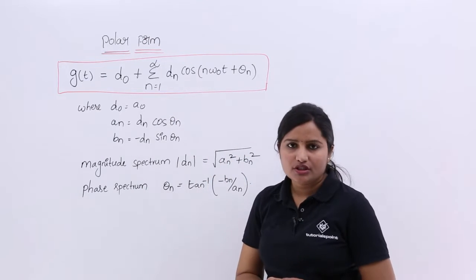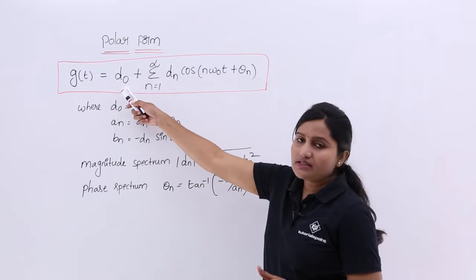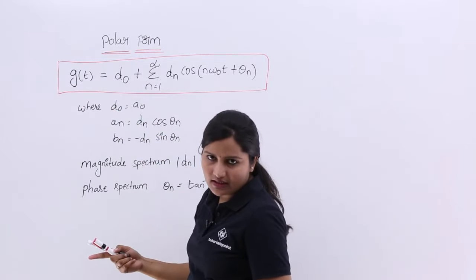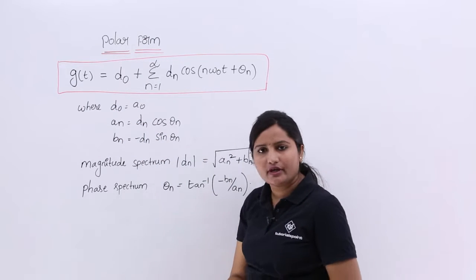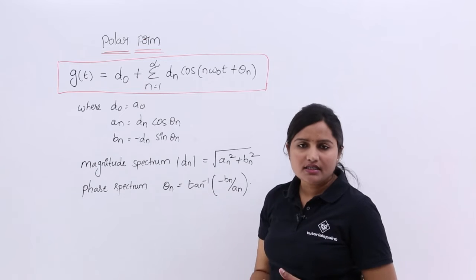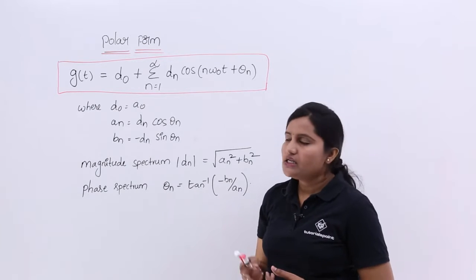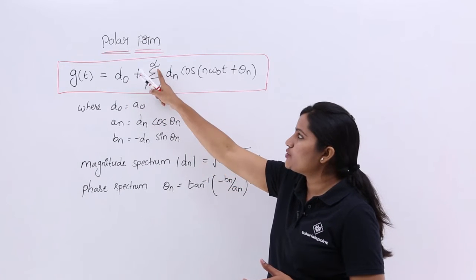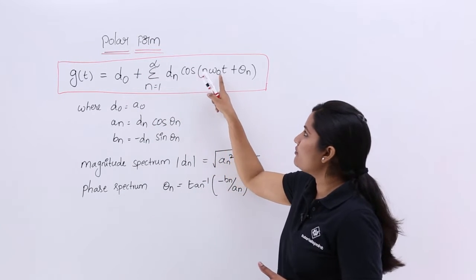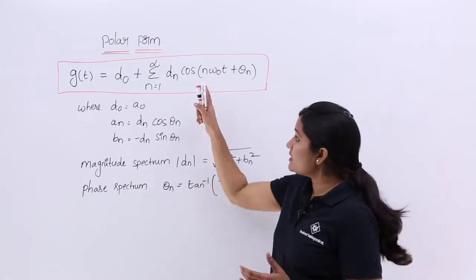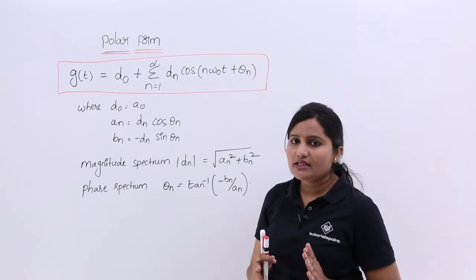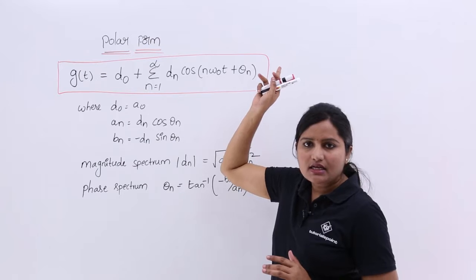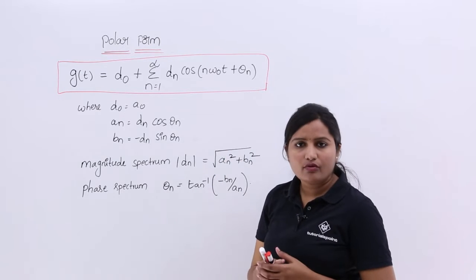this is the equation to write in polar form. For a signal g(t), if you want the polar form, we can write it like this: g(t) is any signal for which you can give a trigonometric Fourier series representation. If that signal has no symmetry, we represent it in polar form as d₀ plus summation n equals 1 to infinity of dₙ cos(nω₀t + θₙ). In the trigonometric Fourier series we have a constant coefficient, an even coefficient with cos(nω₀t), and bₙ sin(nω₀t).